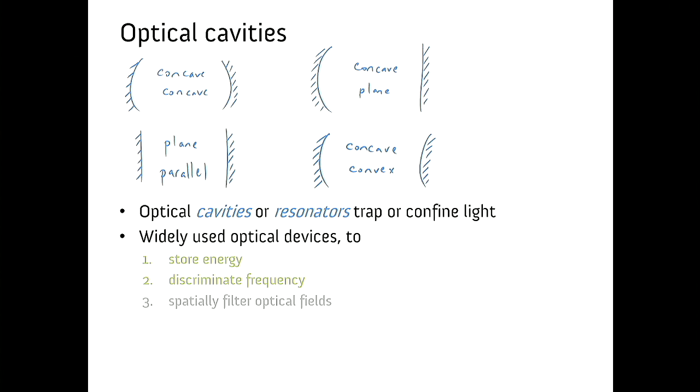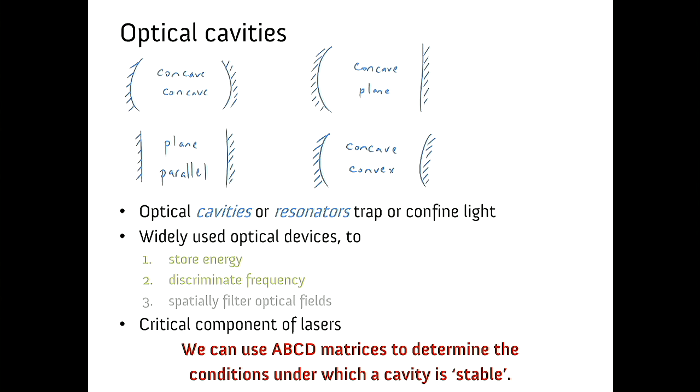Our job today is to figure out whether they're going to work and under what conditions. They're used to store energy - you get light bouncing back and forth, you can build up a lot of energy. They're used to discriminate frequency. They're excellent filters of frequency and they're also great filters of the spatial modes of light. We can sculpt wave fields by filtering out all the gunk and getting one nice clean mode. They're also the critical component of a laser. You need two things to laze: a gain medium and to catch the photons and recycle them back through the gain medium.